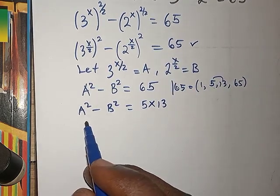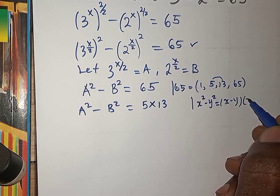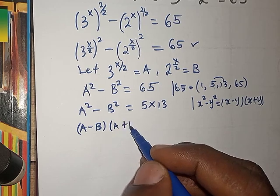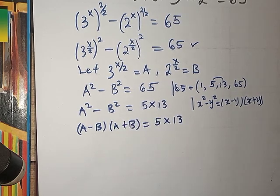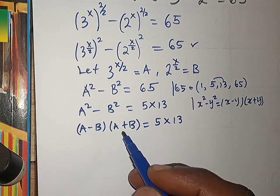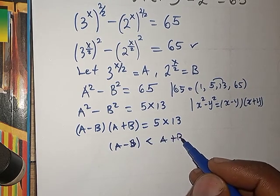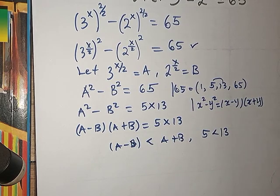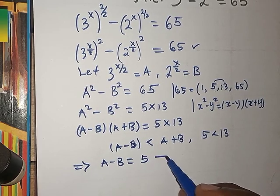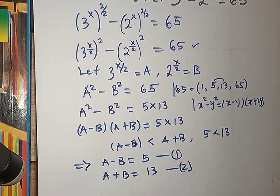We apply the difference of two squares identity: A squared minus B squared equals (A minus B)(A plus B). So we get (A minus B)(A plus B) equals 5 times 13. Since A minus B is less than A plus B, just as 5 is less than 13, by comparison we set A minus B equals 5 (equation 1) and A plus B equals 13 (equation 2).